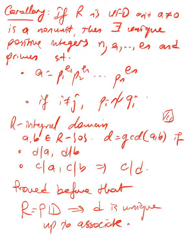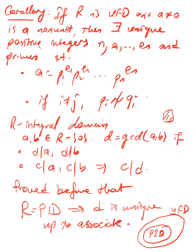Now we will prove this for the larger class. Since every PID is a UFD, and every Euclidean domain is inside PID, we will prove that for every UFD, the greatest common divisor exists and is unique up to associate. So here is the proposition: if R is a UFD and a, b are in R and not both zero, then a and b have a greatest common divisor d which is unique up to associate.